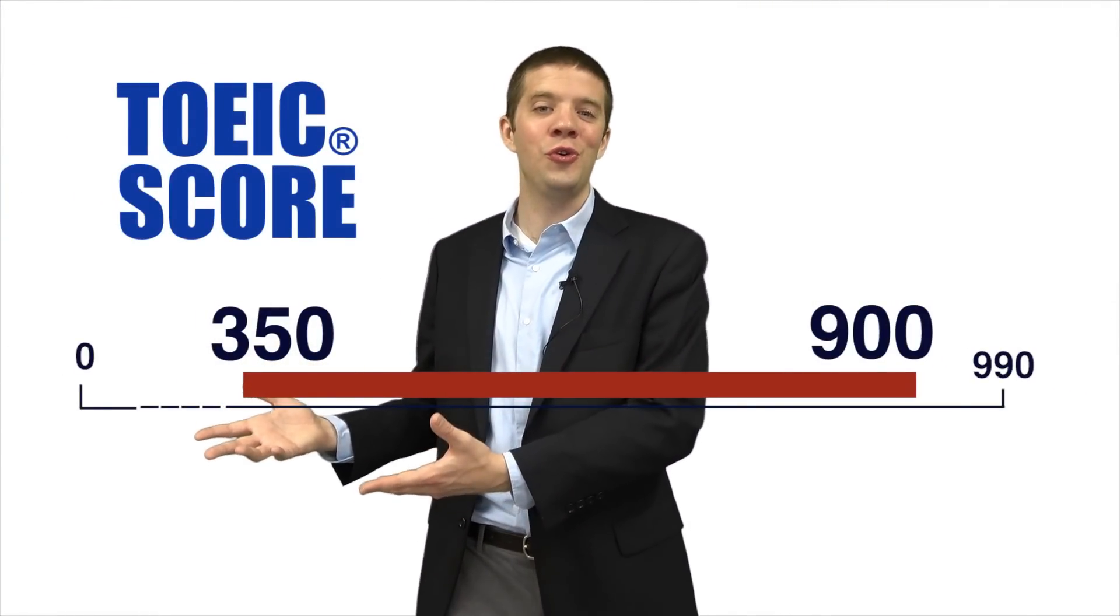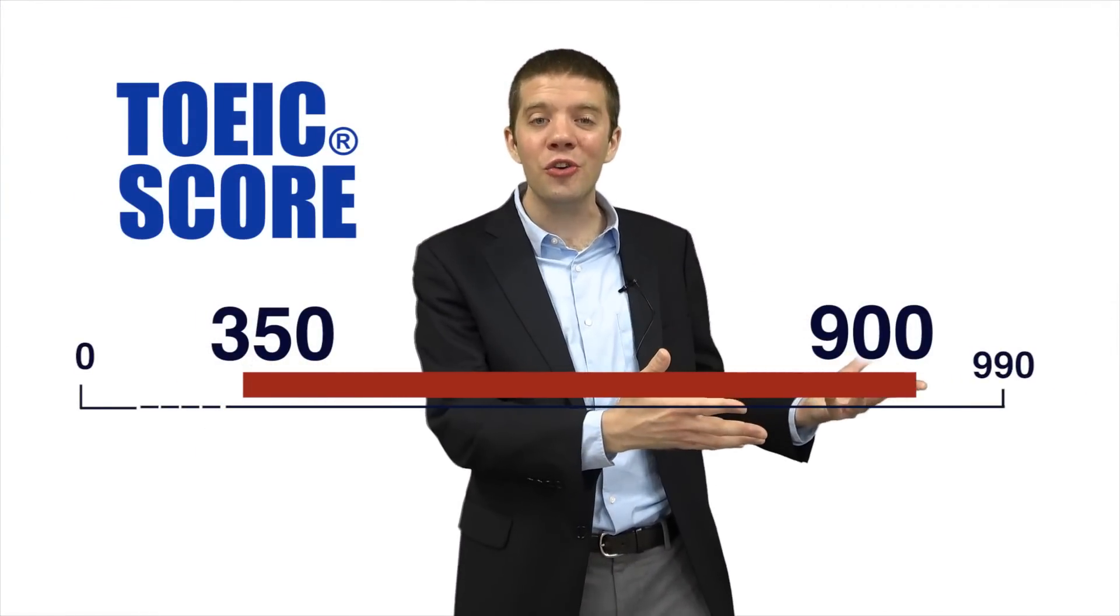Their TOEIC scores ranged from below 350 to above 900. But what we found is that it only takes two days for a Japanese high school graduate to begin to speak English with confidence.